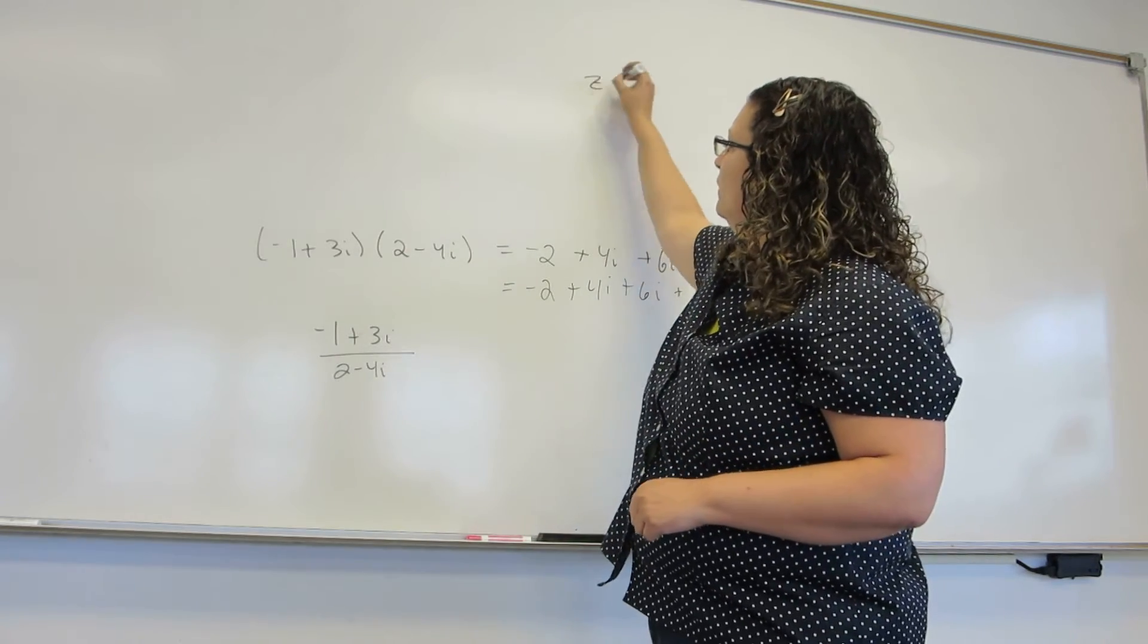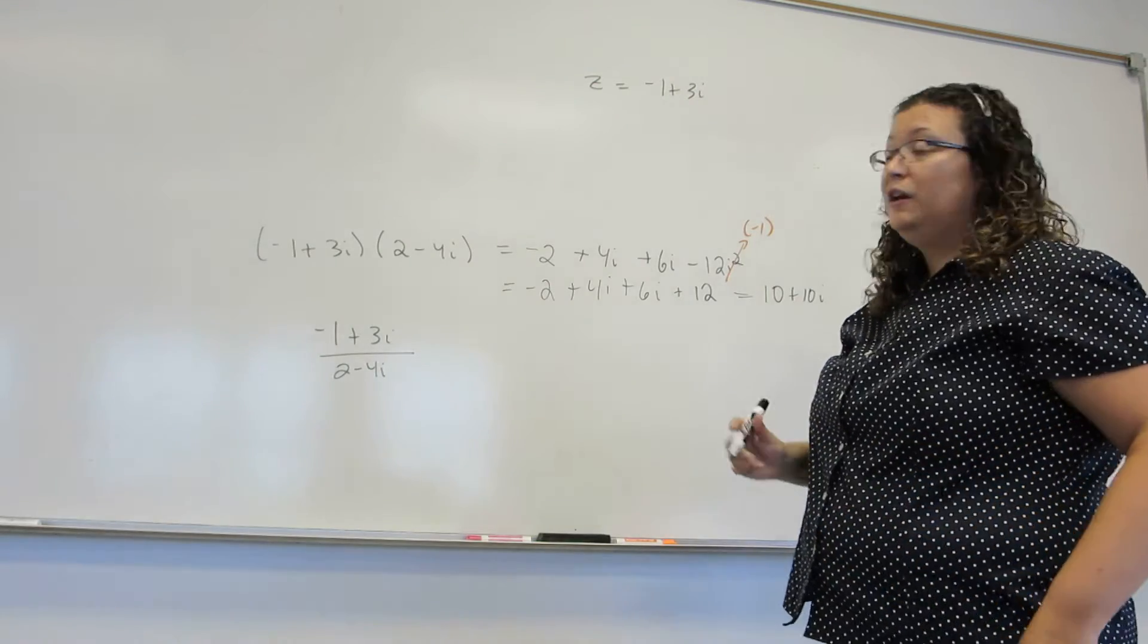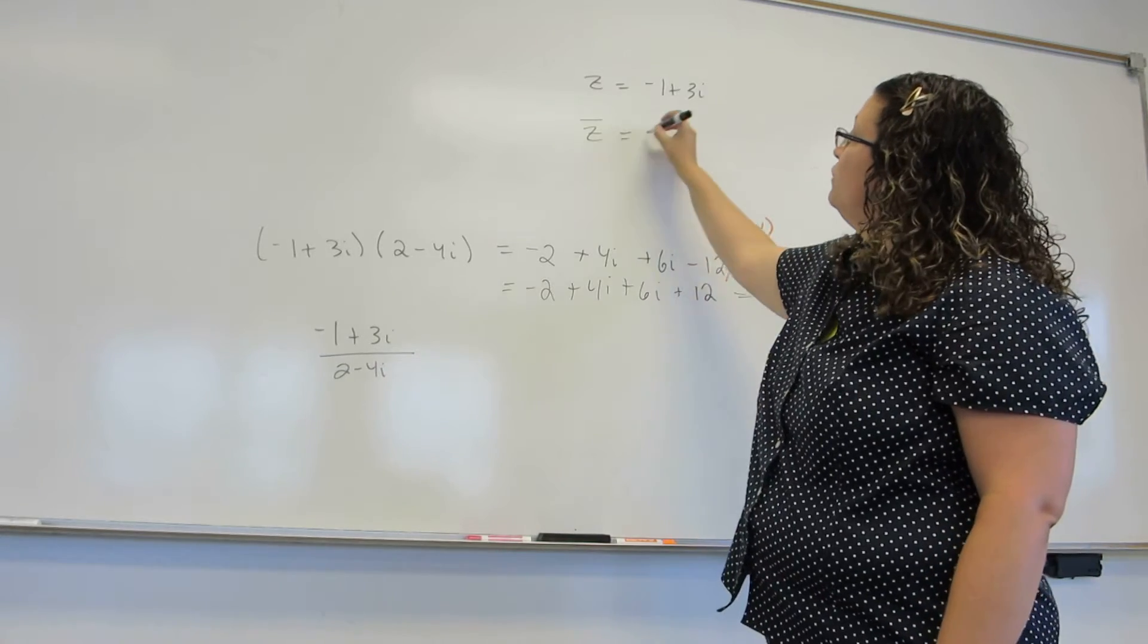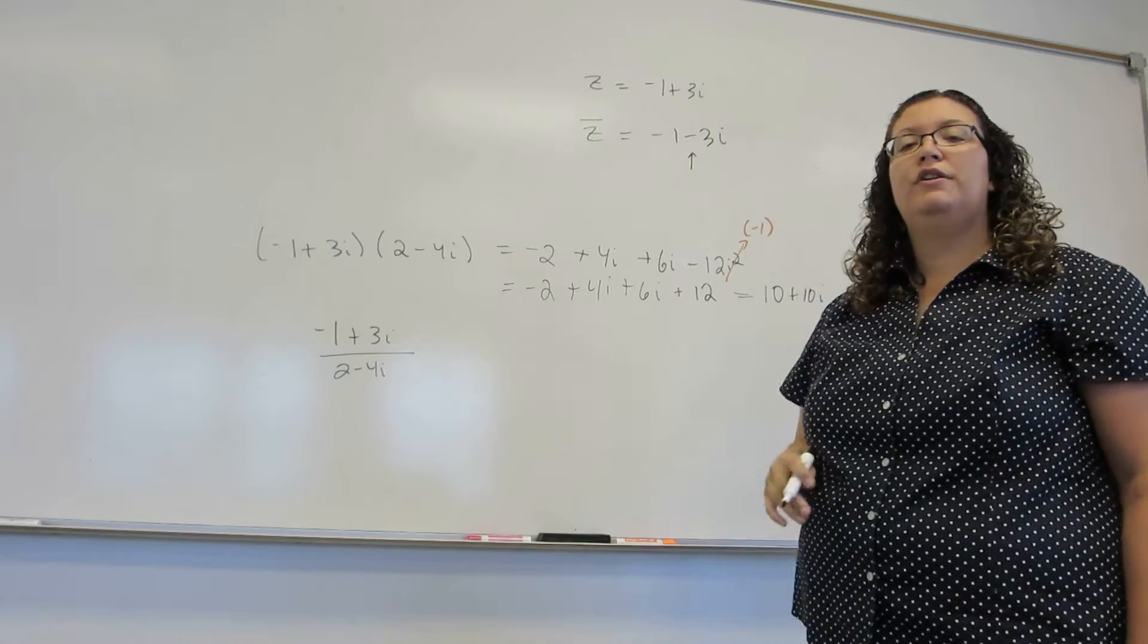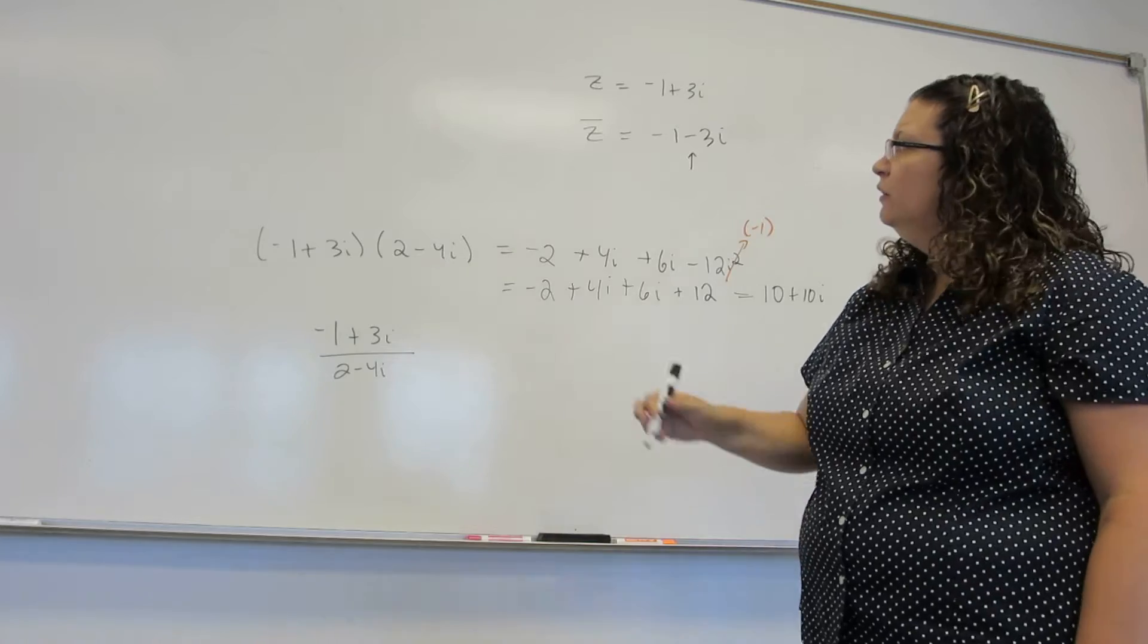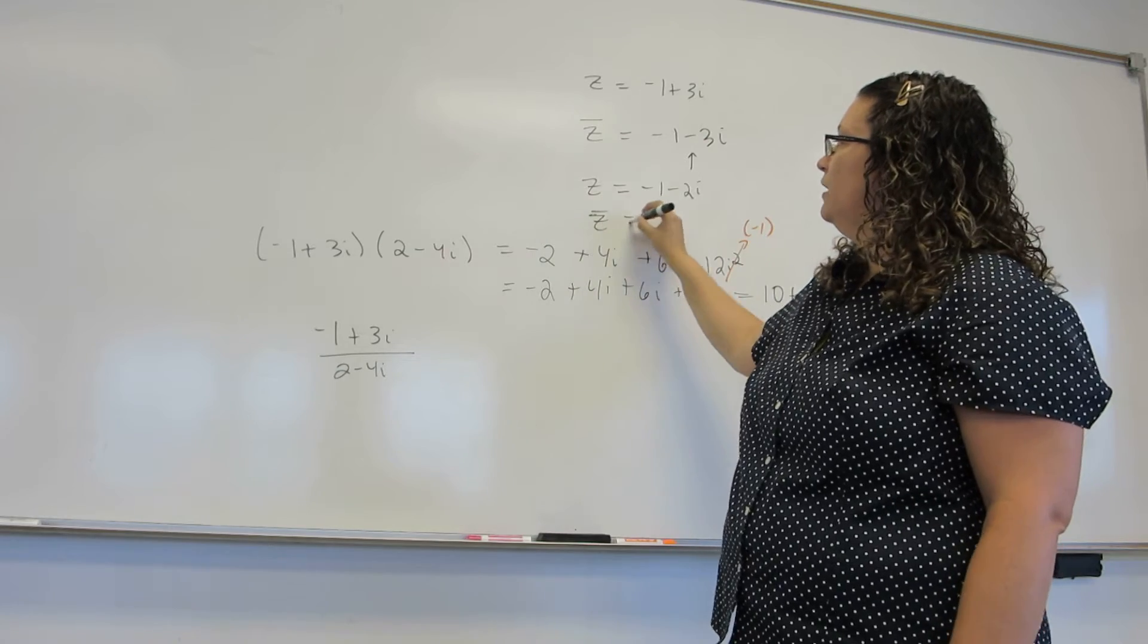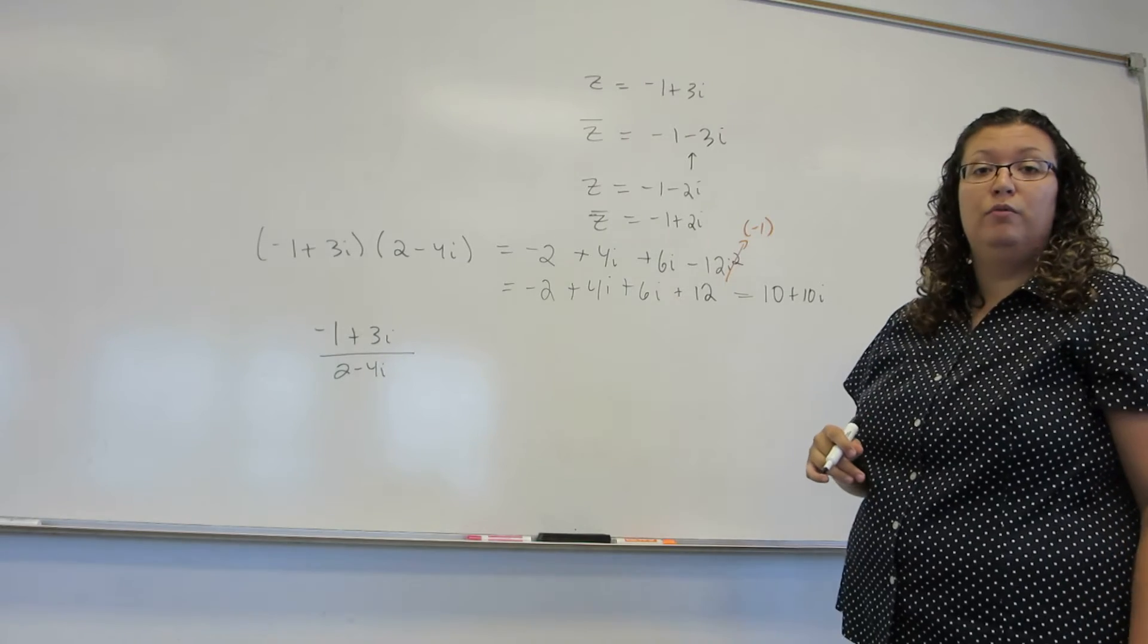So if we have a complex number minus 1 plus 3i, the conjugate and the notation for that is to put a bar over the number. The conjugate is to change the sign on the imaginary portion. So whatever part has an i, you change the sign on the i. So if z were minus 1 minus 2i, the conjugate would be minus 1 plus 2i. You change the sign on just the i portion.